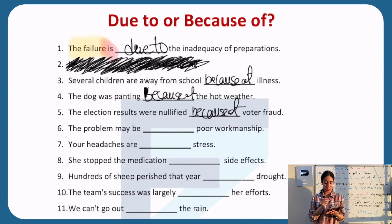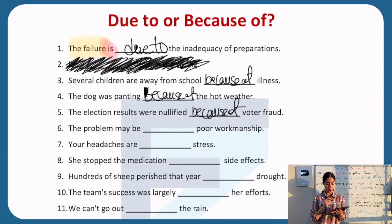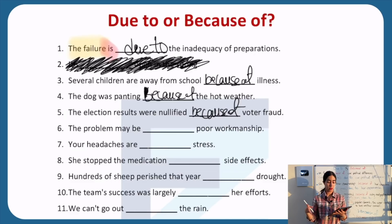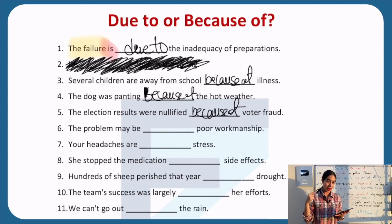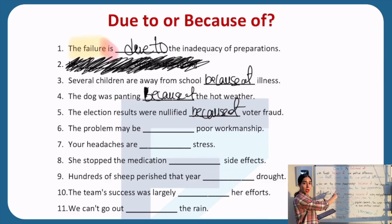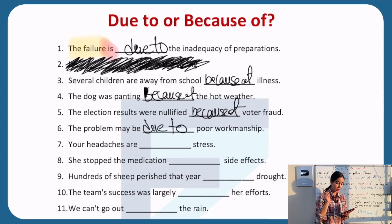Number five: 'The election results were nullified ___ voter fraud.' Test: 'caused by voter fraud' — 'The election results were nullified caused by voter fraud' — no. Answer: 'because of voter fraud.' Number six: 'The problem may be ___ poor workmanship.' Test: 'The problem may be caused by poor workmanship' — correct! So the answer is 'due to.' 'The problem may be due to poor workmanship.'